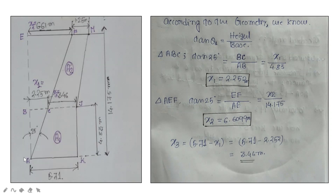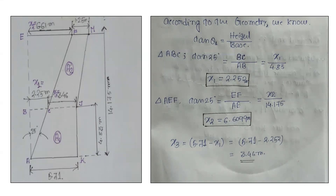From triangle ABC, the sweep angle theta-one is 25 degrees as given. According to the geometry rule, tan(theta-one) equals height over base, where the height is BC and the base is AB. Since AB is parallel to JK and both are perpendicular to AK, the length of AB equals 4.83 meters. Substituting into tan(25°) gives x1 equal to 2.252 meters.